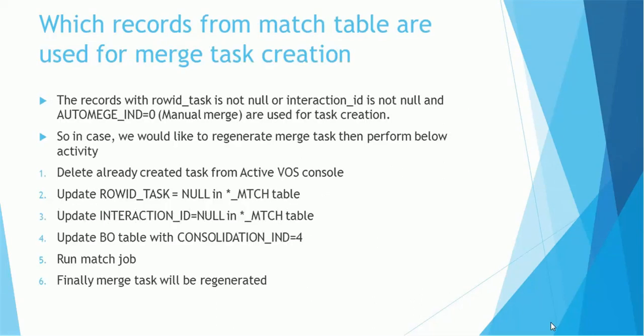Which records from the match tables are used for merge task creation? Specifically talking about the merge task: not all records are considered. The records with row_id_task is not null and interaction_id is not null, as well as auto-merge indicator equal to 0 — meaning manual merge records. If this category is satisfied, those records will be picked for the merge task.